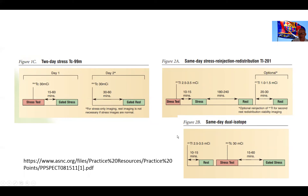Finally, some labs still use a dual isotope scan, starting with a rest scan using thallium and then moving to a stress scan with technetium. This is a more efficient protocol allowing immediate transition from rest to stress images; however, the drawback is that the rest images are acquired with thallium, which has a long half-life and poor image quality.